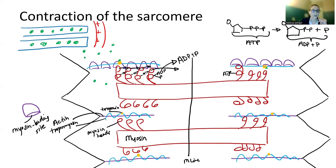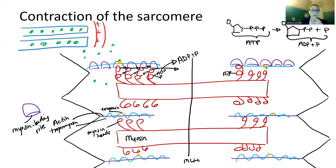As long as calcium is still present and you have enough energy, you're going to continue to contract your muscle — it's going to get smaller and smaller. But the head is now bound to actin after pulling, and it has to release in order to pull again.